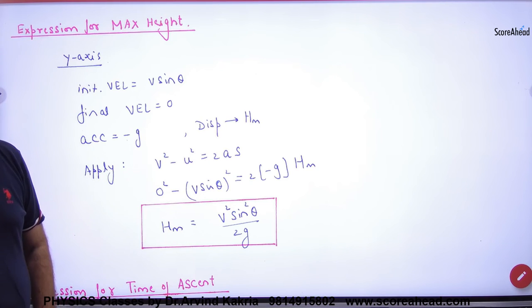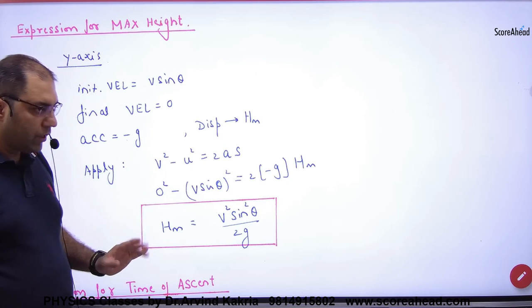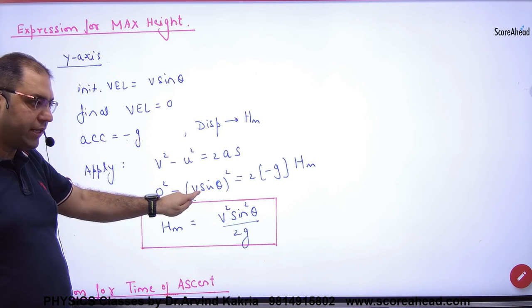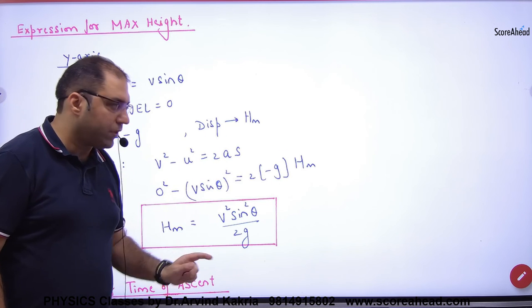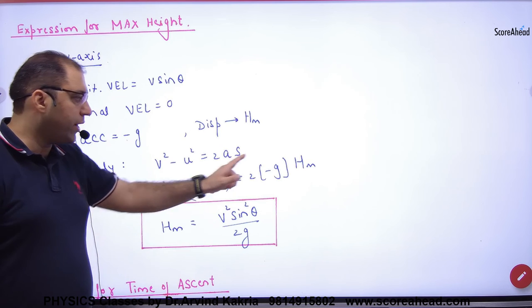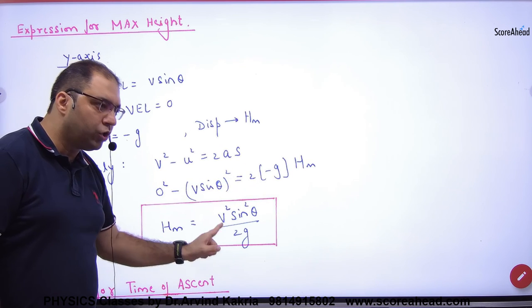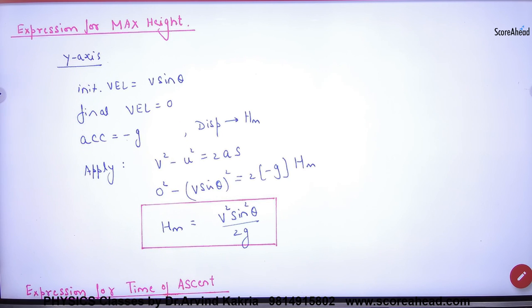Clear here? So you apply the equation in y-axis: v squared minus u squared equals 2as. So final velocity zero, initial velocity v sin theta, acceleration minus g, and height H_m. So minus and minus cancel. So what is the value of H_m? V squared sin squared theta divided by 2g. Remember this formula. This is the expression for maximum height.